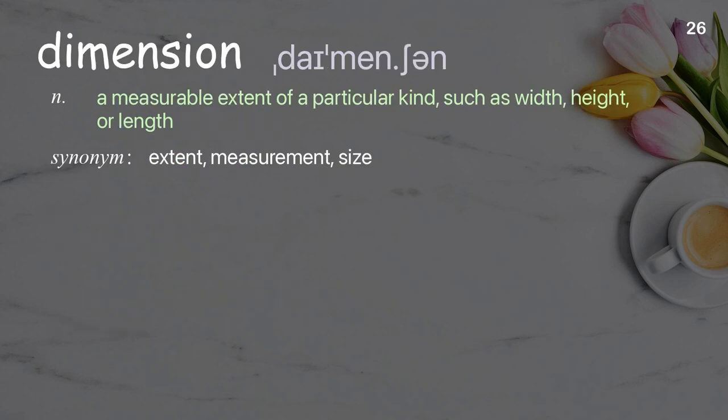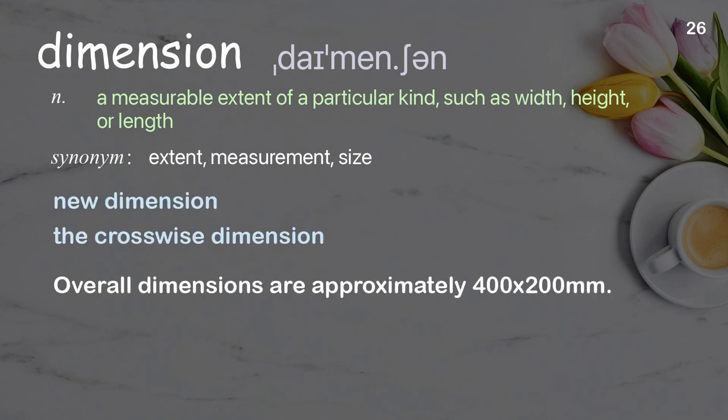Dimension. A measurable extent of a particular kind, such as width, height, or length. Examples: New dimension, the crosswise dimension. Overall dimensions are approximately 400 by 200 millimeters.